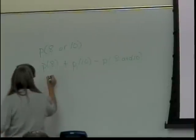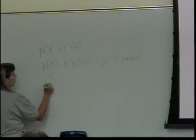There were 5 things in there. How many total things are in my table? 36. So the probability of getting an 8 is 5 over 36.